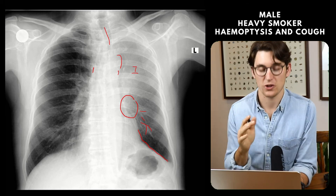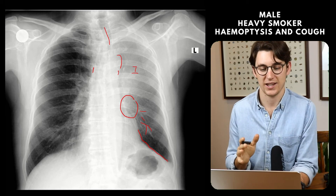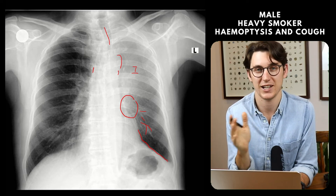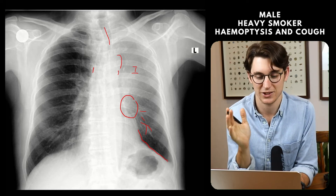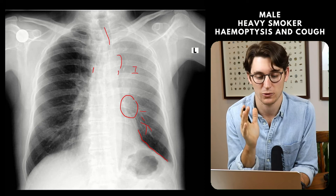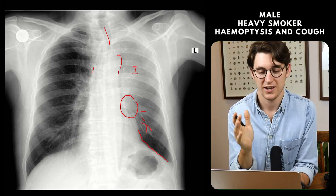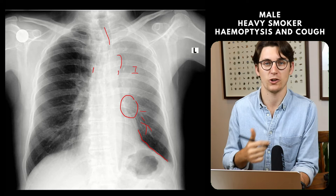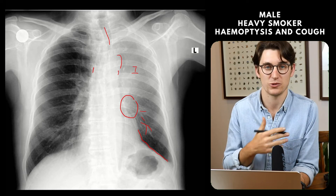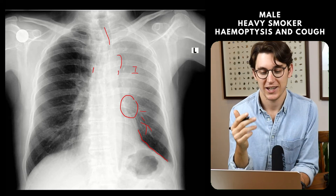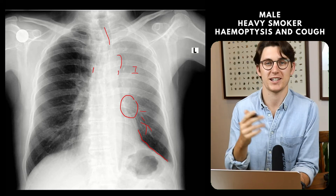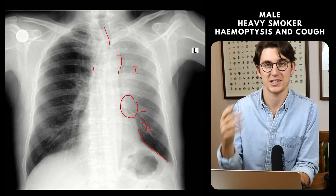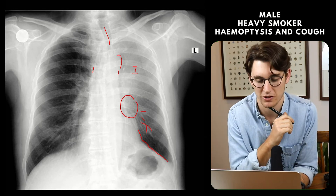I've chosen this case because it's a very important one to know. I think examiners can use it as a yardstick — a kind of pass-fail for their candidates. Lobar collapse is really common, and if you don't recognize it straight away, it raises the question of what else you might be missing and whether you've really spent enough time looking at chest radiographs.